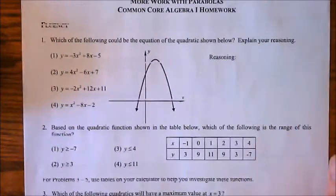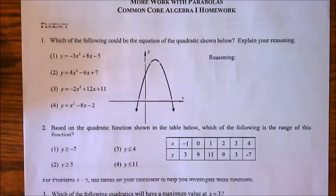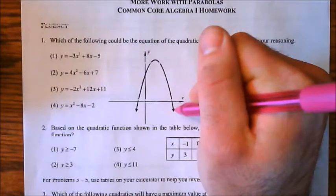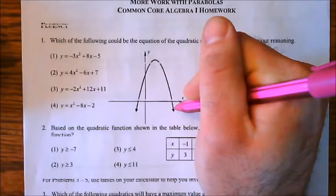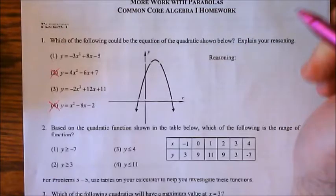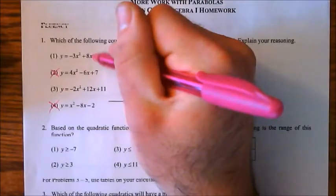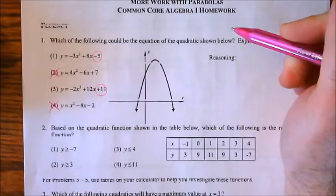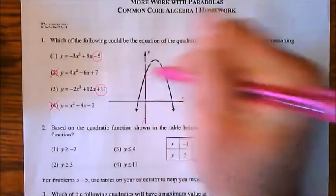Number 1: which of the following could be the equation of the quadratic shown? One thing the lesson taught is that if the lead coefficient is negative, the parabola opens downward; if positive, it opens upward. This is a downward-opening parabola, so we can eliminate choices 2 and 4. Next we look at the y-intercept — the last number. Choice 1 has a y-intercept of negative 5, which would be below the x-axis, while choice 3 has positive 11. The best answer is number 3: it has a negative leading coefficient and a positive y-intercept.